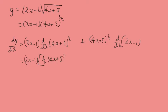We get (4x plus 5) to the power of minus a half, and from the derivative of the internal bit we get a factor of 4, plus (4x plus 5) to the power of a half times 2.